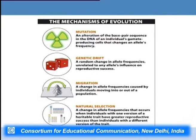Any allele — even one that is not very adaptable, or even deleterious — might be saved in a population and passed on to further generations through genetic drift. Third, migration is a change in allelic frequencies caused by movement of individuals from one population to another. If two different populations have different allelic frequencies for a given gene locus, movement of individuals between them will change allele frequency over time.